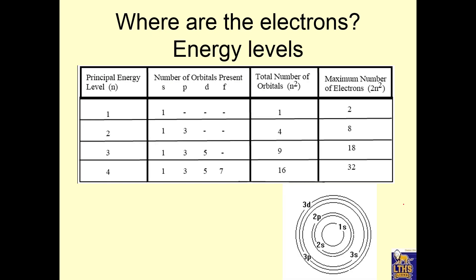So where are the electrons? We know they're outside the nucleus, and they're not crashing into the nucleus because they have quanta of energy. So they're quantized, and they have enough energy to stay out of the nucleus, but they do go into energy levels. Now those levels are called levels 1, 2, 3, and 4 — principal energy levels.